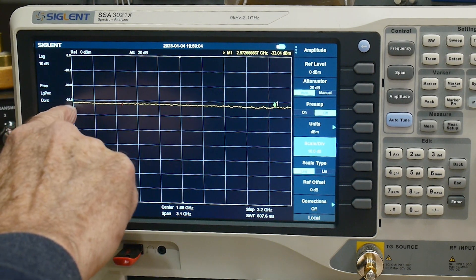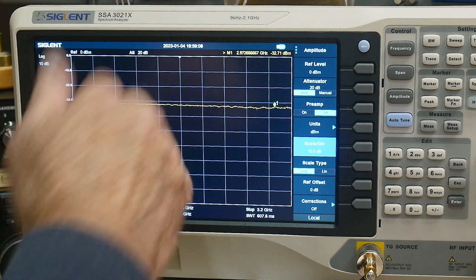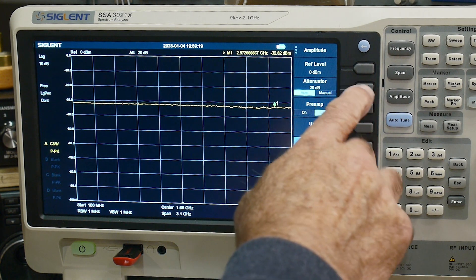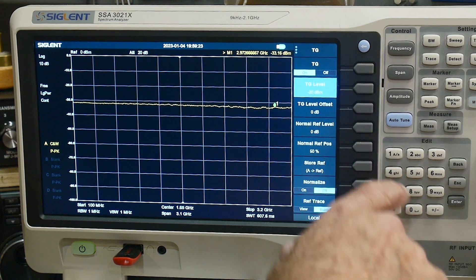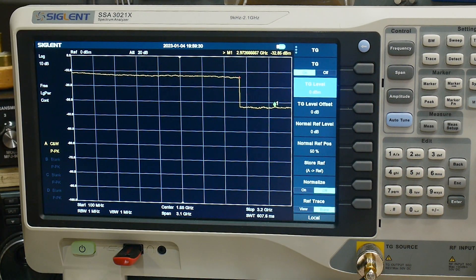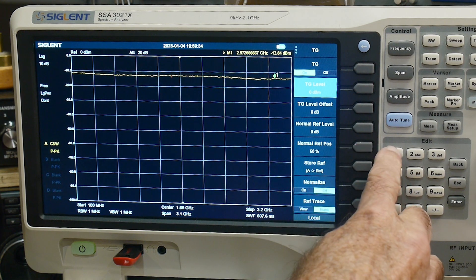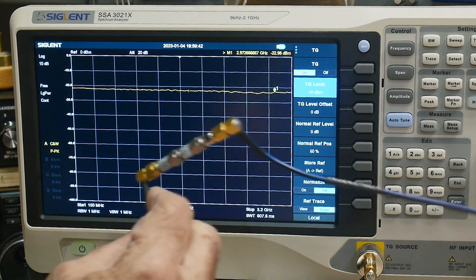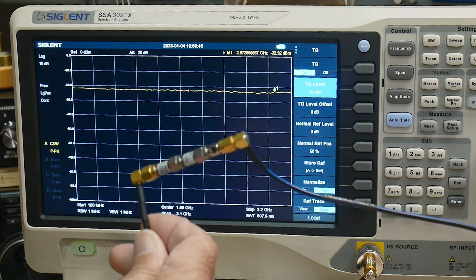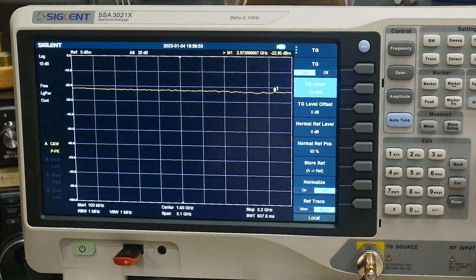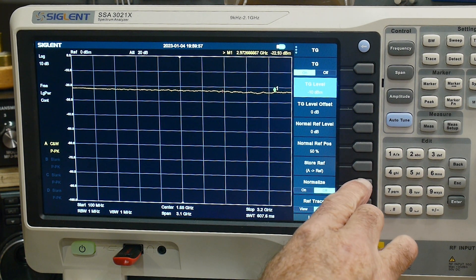Because we have so much attenuation, I'm going to change the tracking generator to minus 10. So the generator is now outputting minus 10 and I'm going to put in six dB. Make sure these are six, two threes. It seems to be running a little low but it doesn't matter. We will store the reference and then normalize.